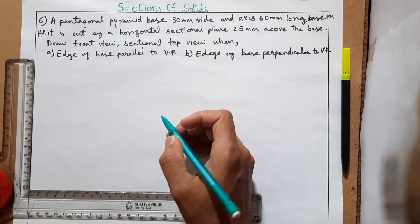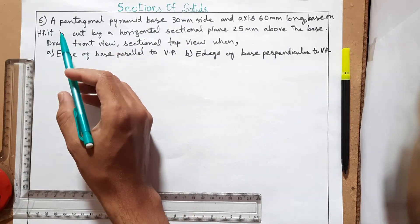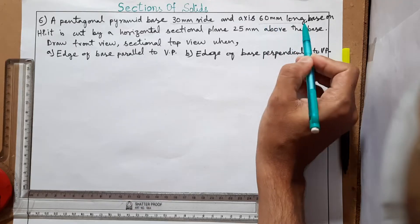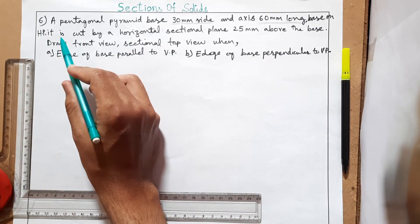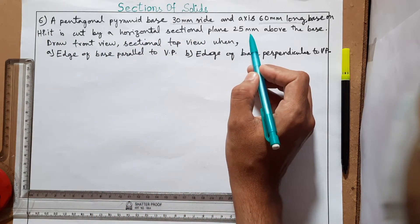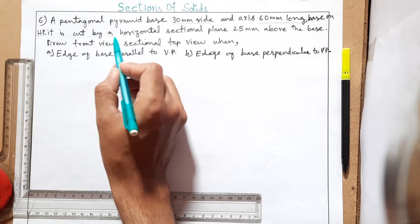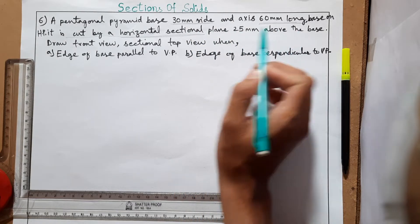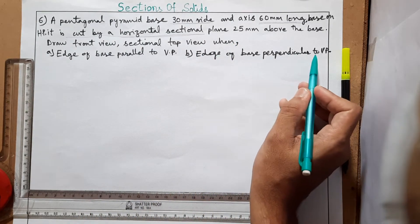Welcome back. In this video we will be seeing sections of solid problem number six. A pentagonal pyramid with base 30 mm side and axis 60 mm long is resting by its base on HP. It is cut by a horizontal section plane 25 mm above the base — meaning the section plane is parallel to HP. Draw its front view, sectional and sectional top view when the edge of base is parallel to VP, and edge of base perpendicular to VP.